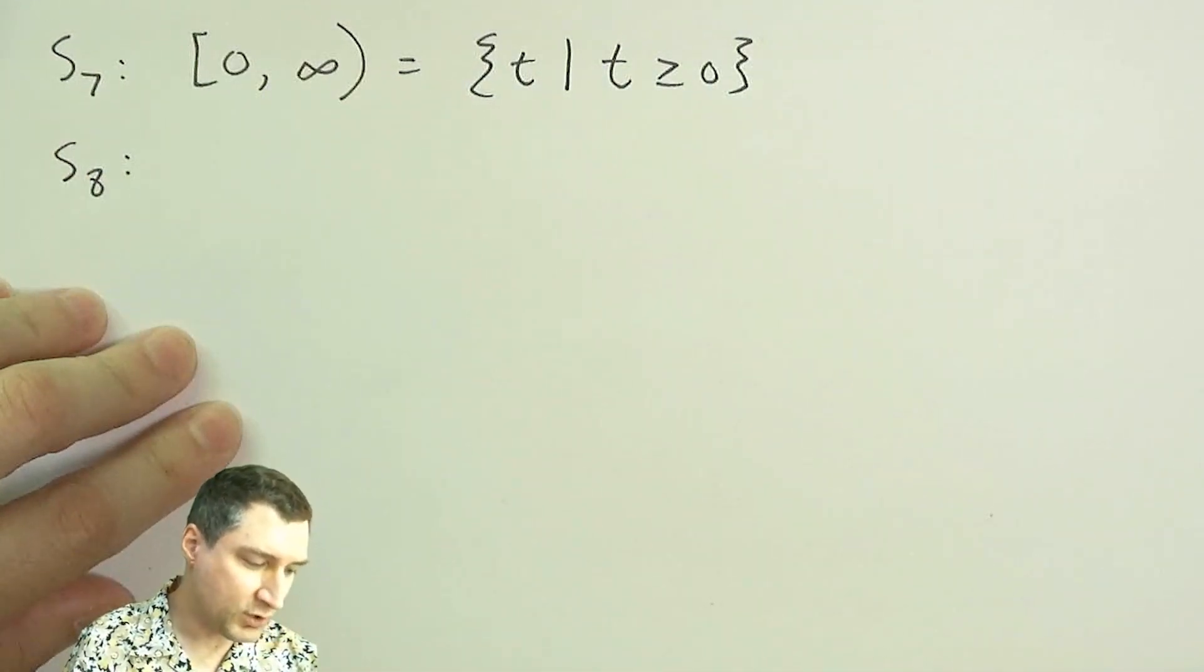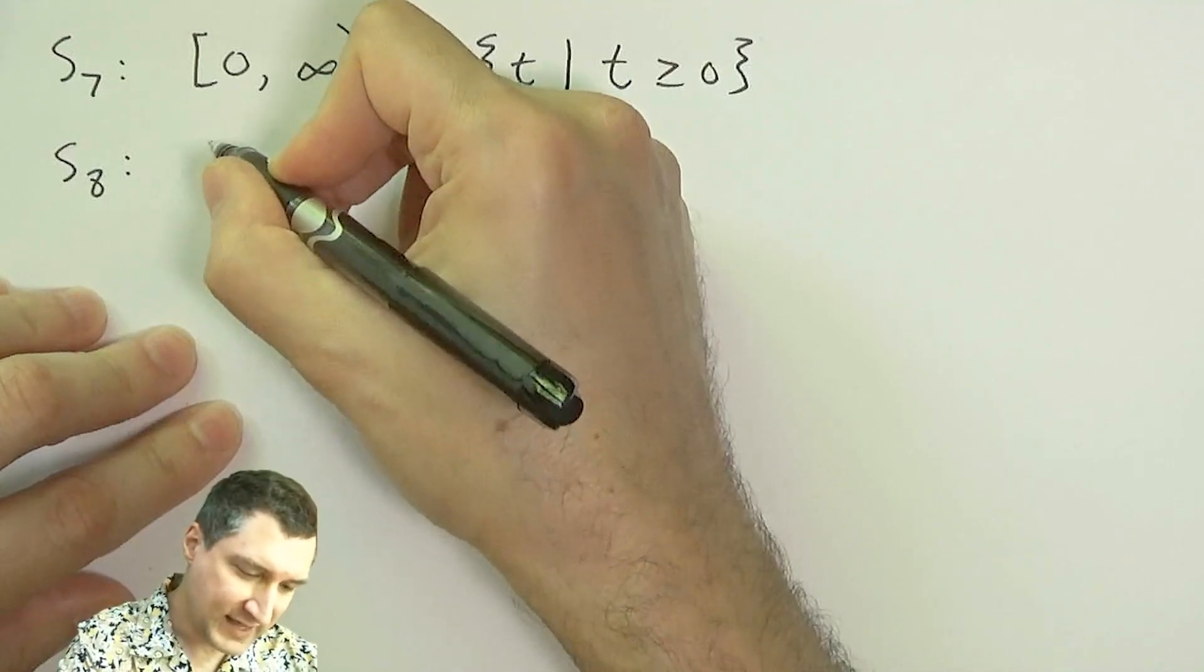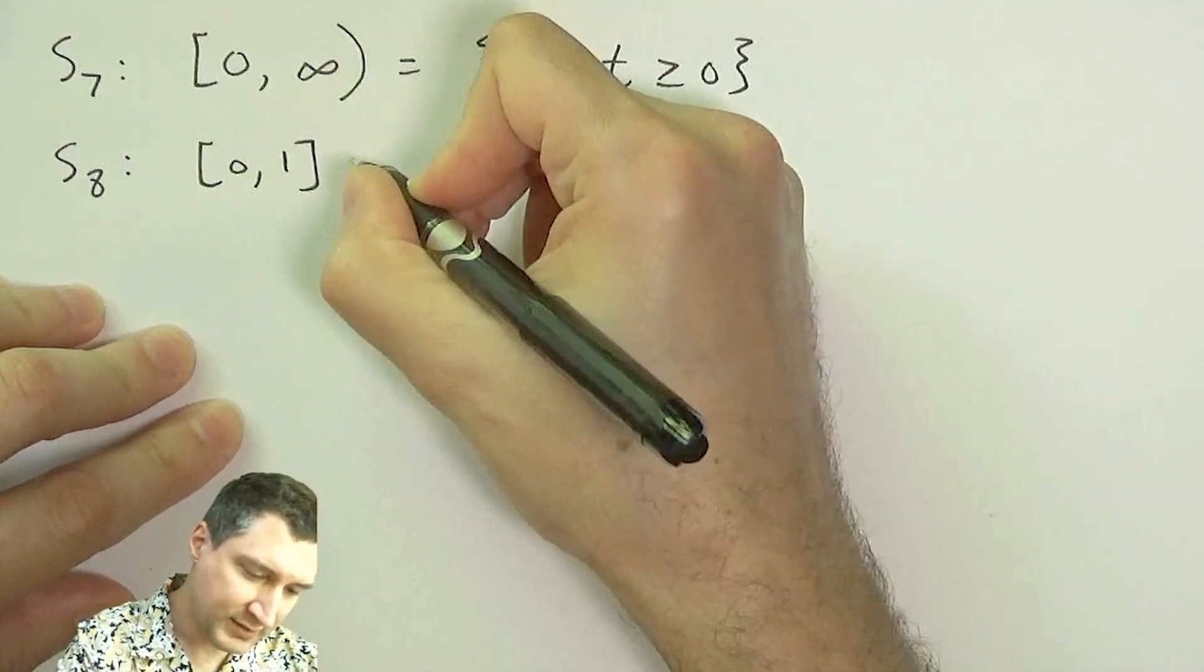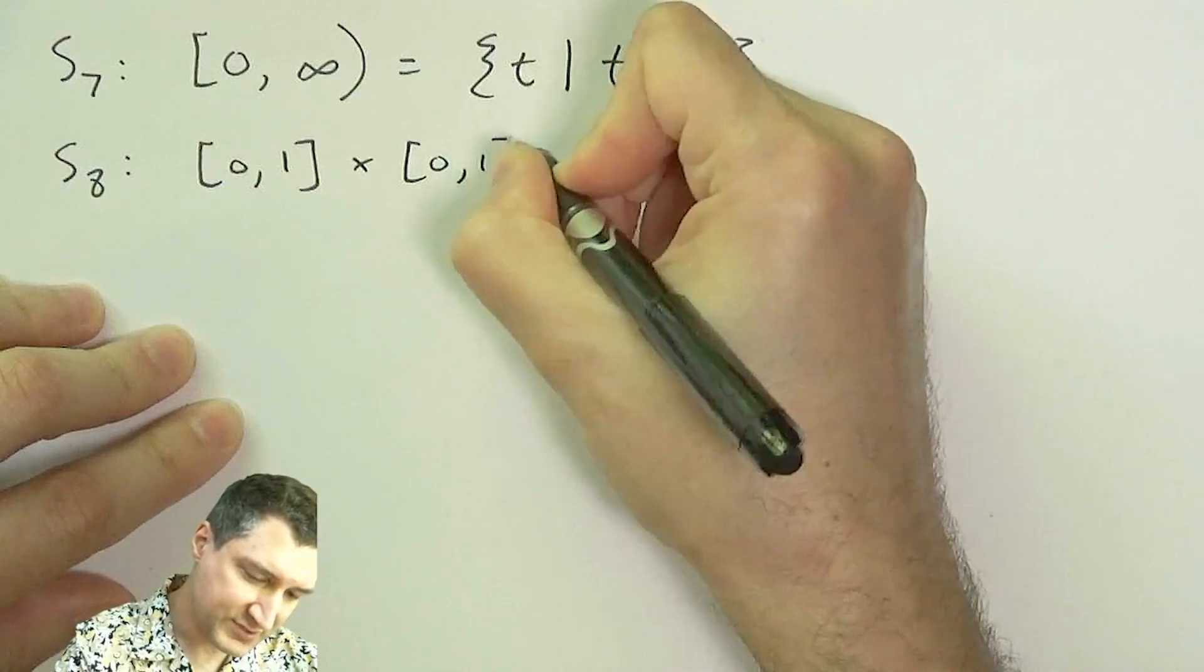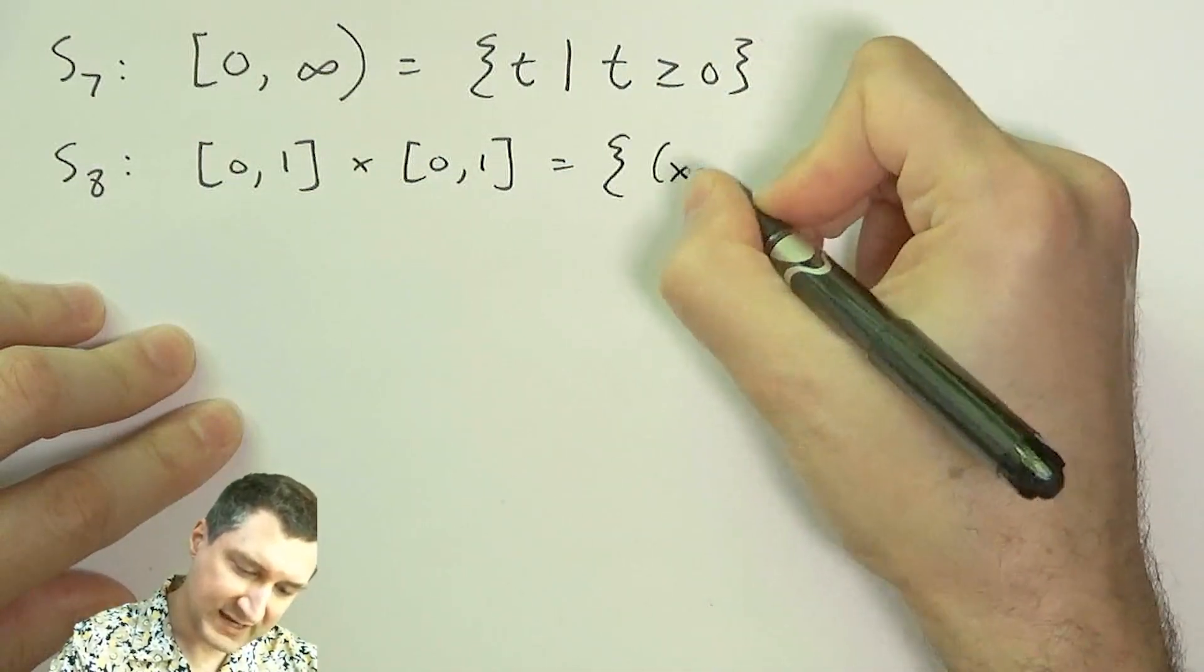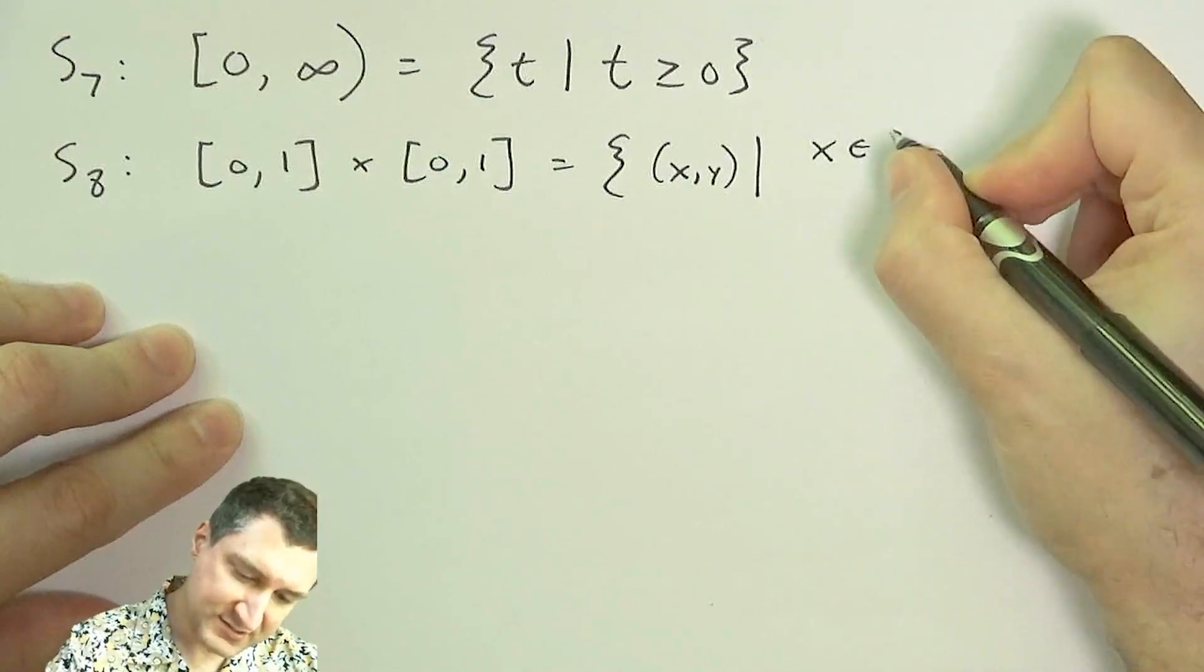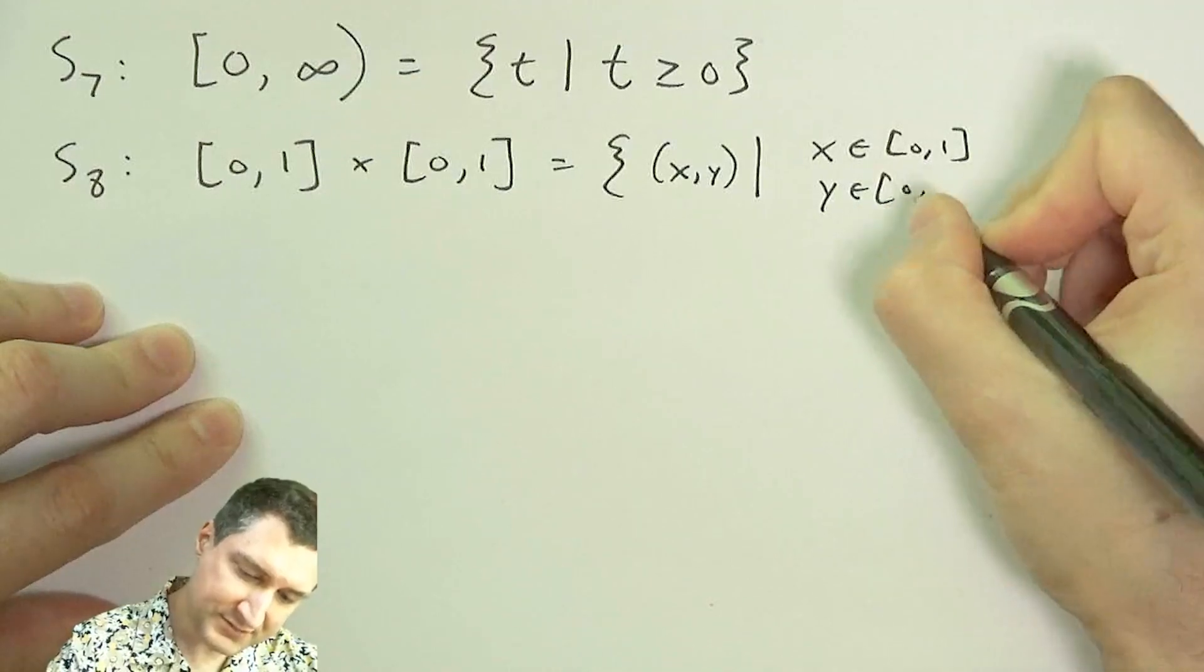In the case where I record two separate numbers, that's like basically saying I have a number between zero and one, and I have another number between zero and one. Or a different way of saying that is I have a set of x comma y such that x is in this range and y is in this range.